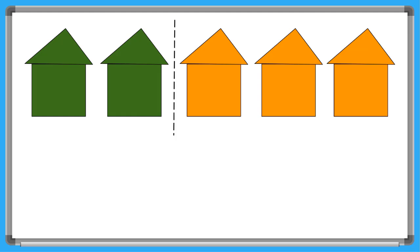So what fractions of the houses are green? Two out of the five houses are green, which we can write as two over five. And which fraction of the houses are orange? Three out of five.